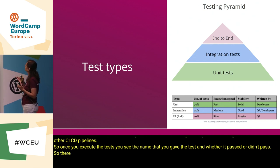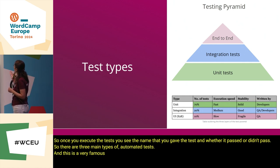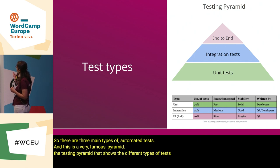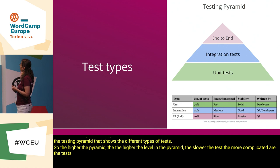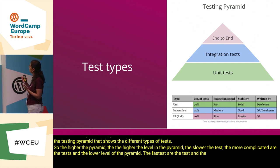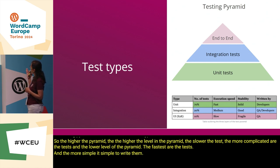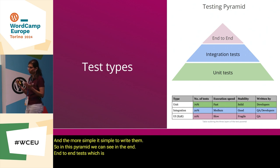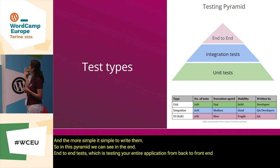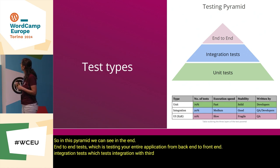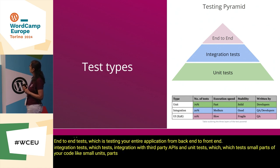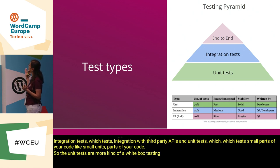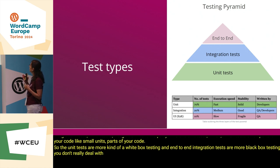There are three main types of automated tests, shown in the famous testing pyramid. The higher the level of the pyramid, the slower and more complicated the tests are. We can see end-to-end tests, which test your entire application from back-end to front-end; integration tests, which test integration with third-party APIs; and unit tests, which test small parts of your code. Unit tests are more white box testing, while end-to-end and integration tests are more black box — you don't deal with the logic inside, just the results.